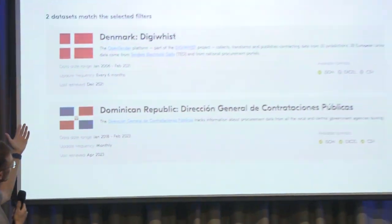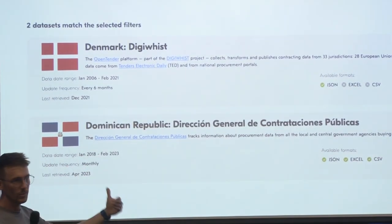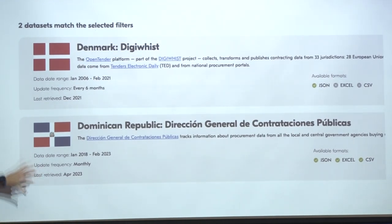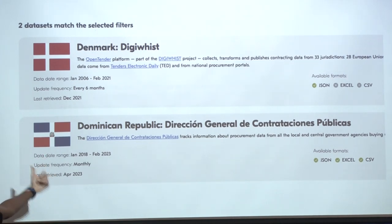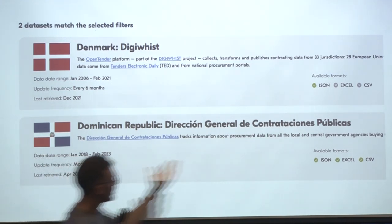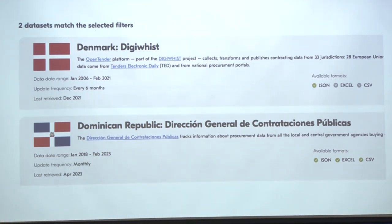If we click on the letter D in the filter menu, we will see the datasets from countries with the letter D — in this case Denmark and Dominican Republic. Inside each box, we provide further detail about the datasets and some contextual information or metadata. In this case, the Dominican Republic has been publishing data from 2018 to 2023, updating on a monthly basis, and the last update was April 2023. We also provide detail about the different formats users can get the data in.